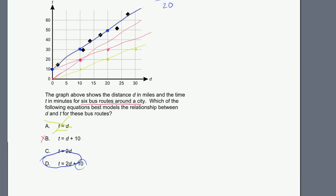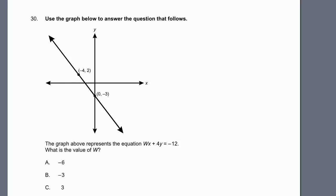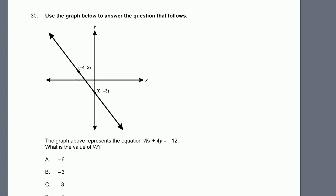Next question. Use the graph below to answer the question that follows. They've drawn us a little line. They've drawn some points on the line. The graph above represents the equation wx plus 4y equals minus 12. What is the value of w? So they gave us two points, so we can figure out the equation of this line. But maybe we don't have to go that far.